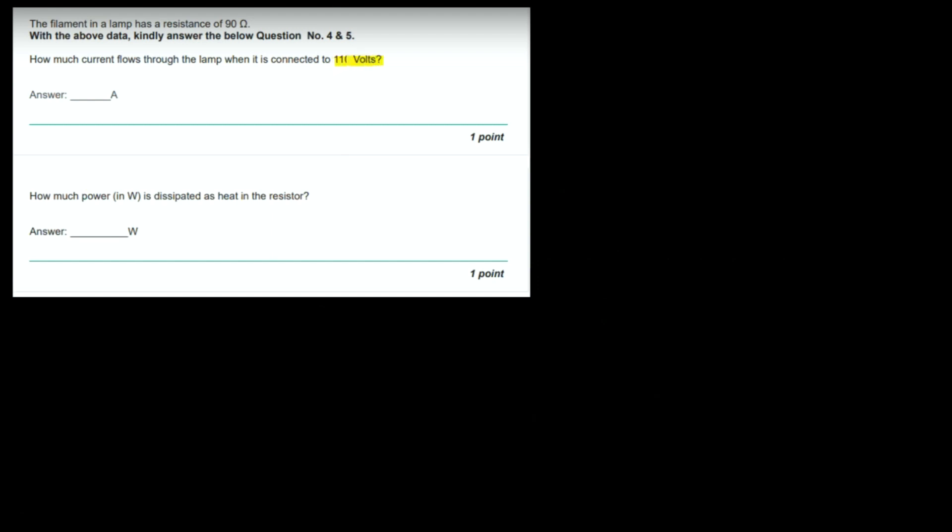The filament in the lamp has a resistance of 90 ohm. How much current flows through the lamp when it is connected to 110 volts? Rearranging Ohm's law: I = V / R = 110 / 90 ≈ 1.22 ampere. That will be the answer of this question.